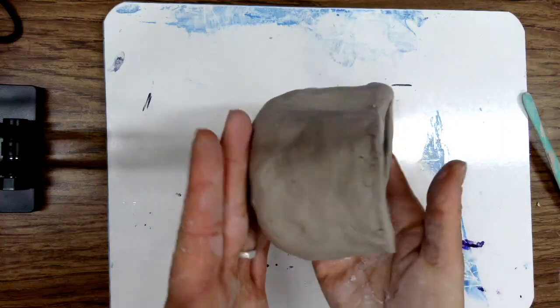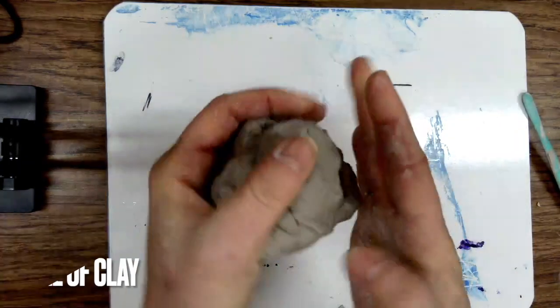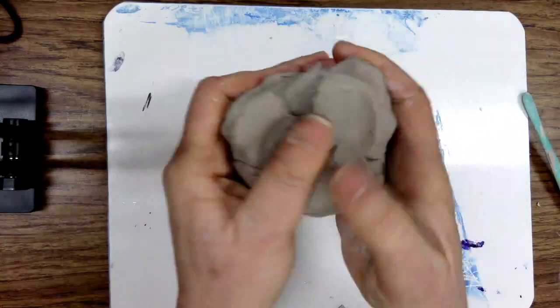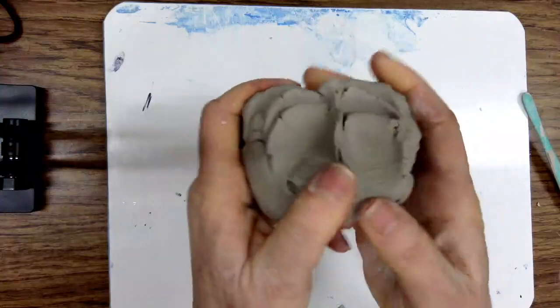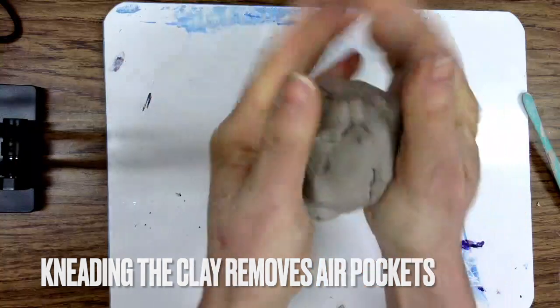How to make a pinch pot. Start with a small clump of clay. Knead the clay with your hands to soften it up and to get out any air pockets.